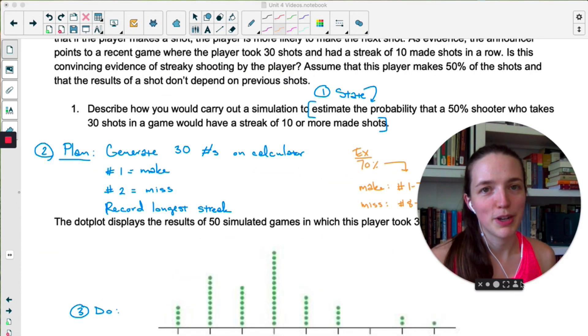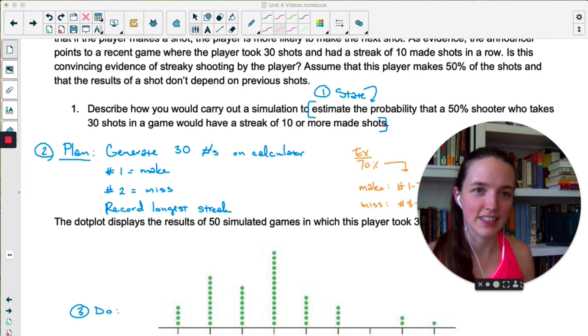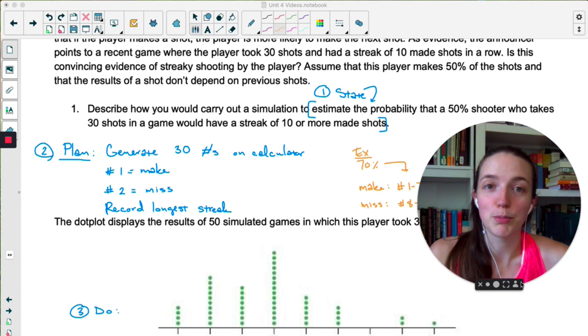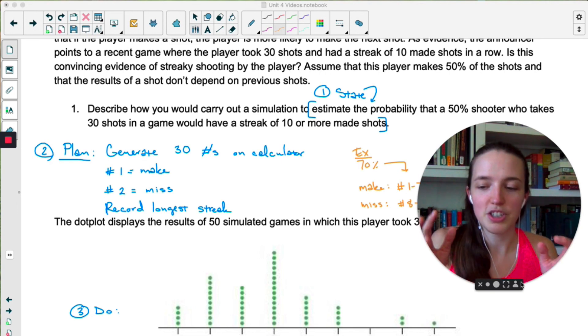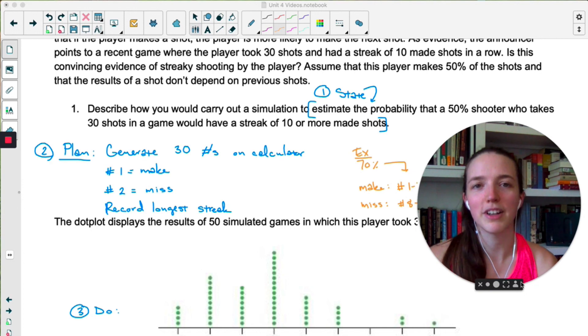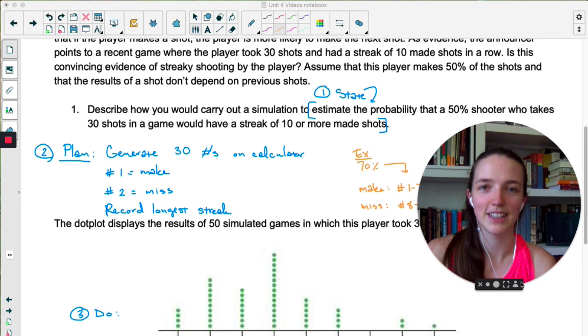One thing I want to mention about simulations is it's really important to not overlook the state step. I know it seems silly to just state what you're trying to find, but it can really help you process what is a lot of information. They gave you a ton of stuff in this problem: 30 shots, streak of 10, 50%, 10 or more shots. If you can just simplify it to one question, it'll really help you figure out, okay, I need this many numbers, I need to decide which numbers represent this. It'll help you plan a lot better if you can clearly state what the problem is that you're trying to solve.